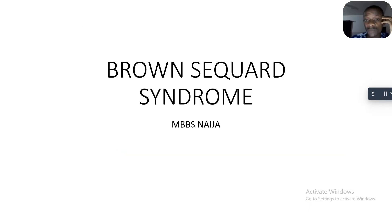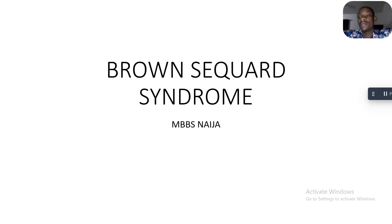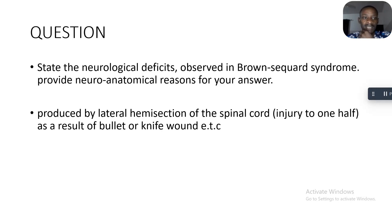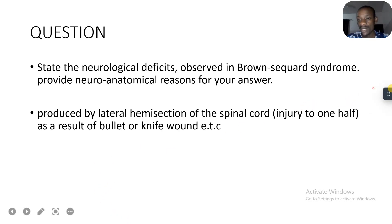Today we'll be talking about Brown-Séquard syndrome — what it is, how it manifests, and the neurological deficits observed. We'll also provide the neuroanatomical reasons for those deficits.